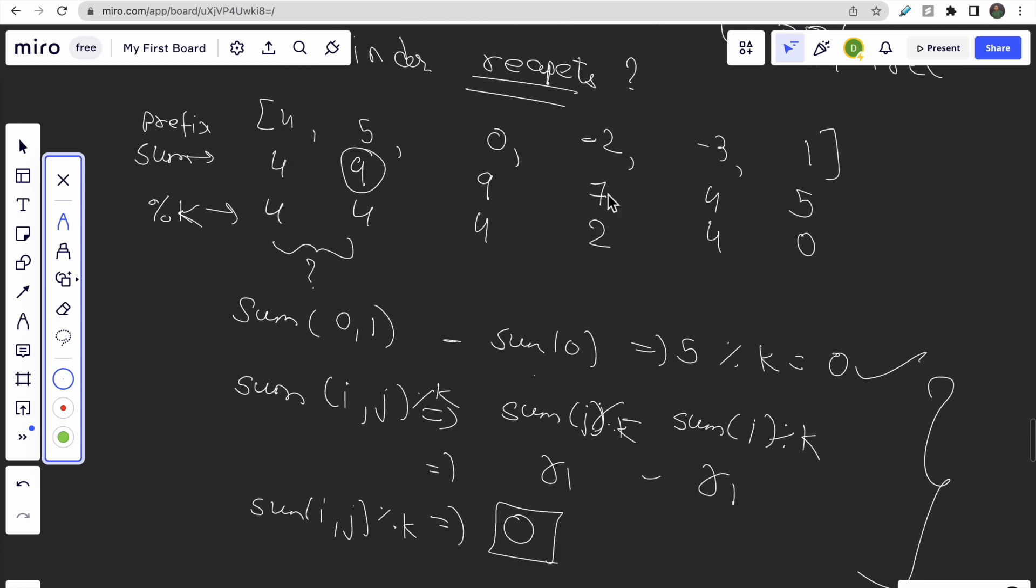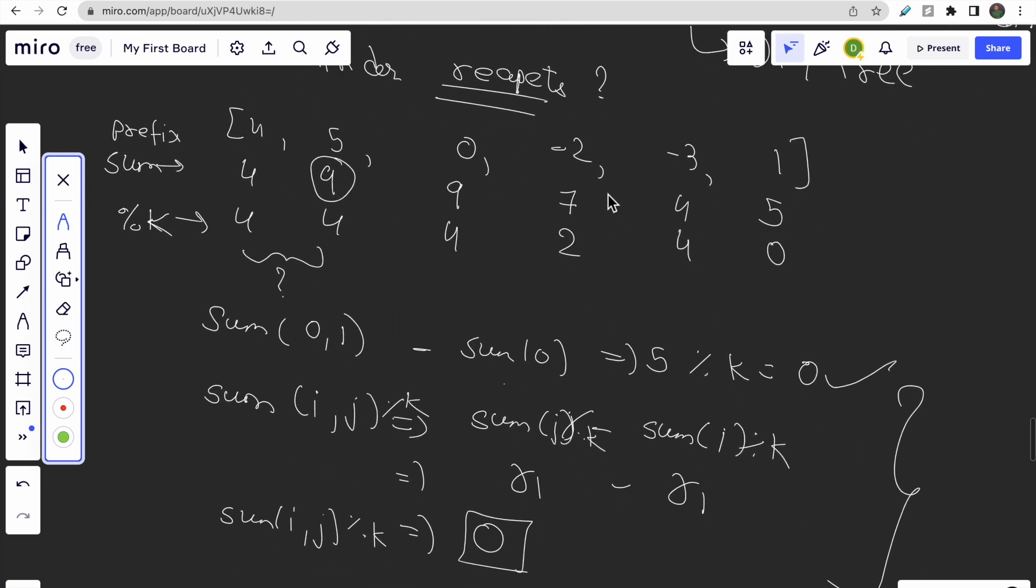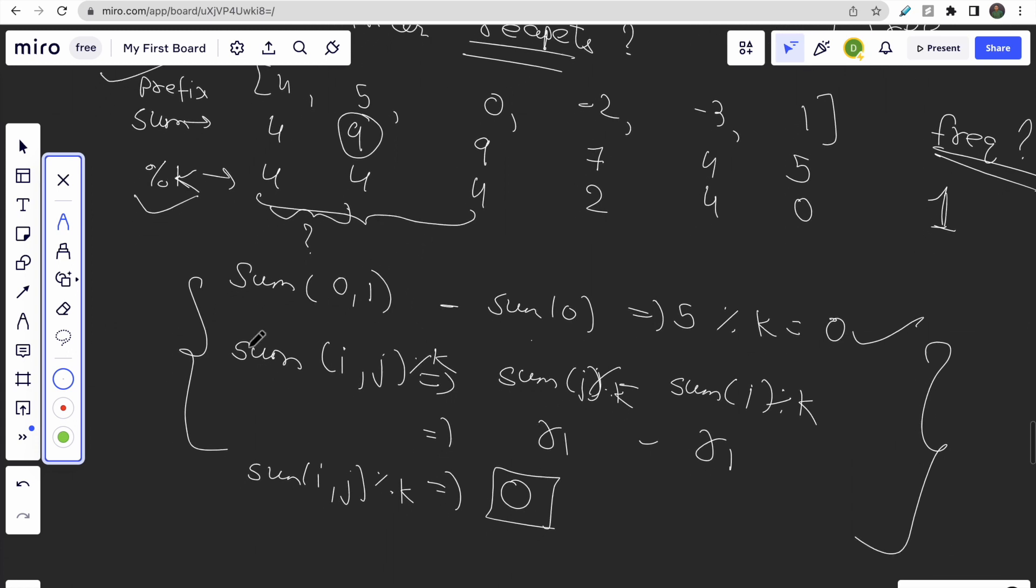So I hope you guys understood the approach of solving this question. That taking the prefix sum and doing modulus of k and whenever we occur in a situation like this, whenever the remainder repeats itself, then we would simply add one to our answer, add the frequency to our answer, frequency of this remainder. So why we are taking frequency?